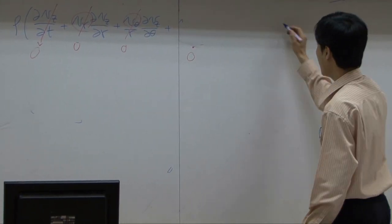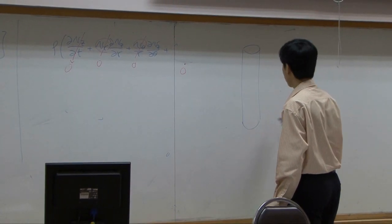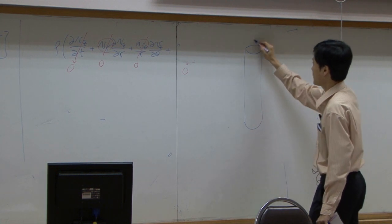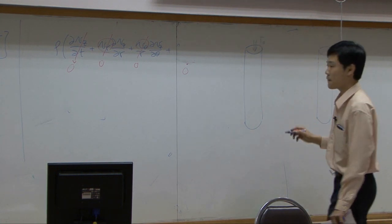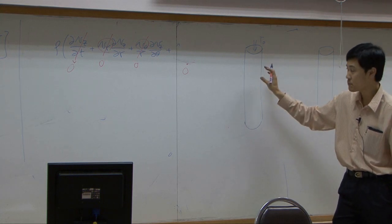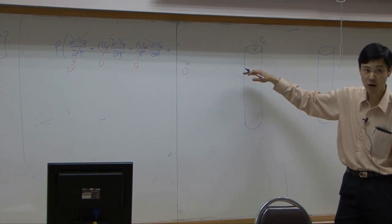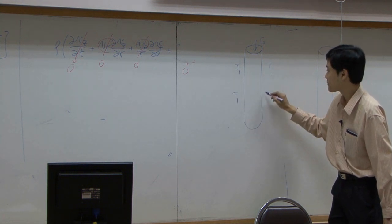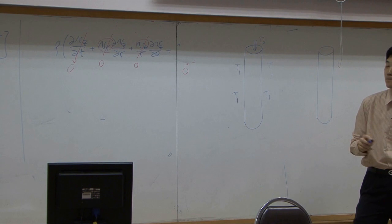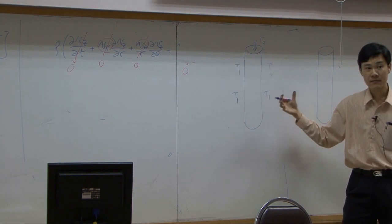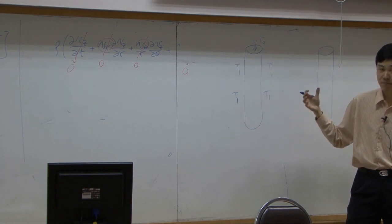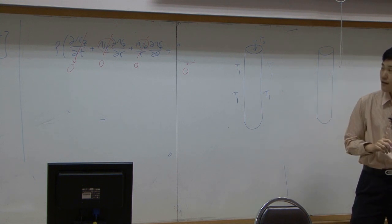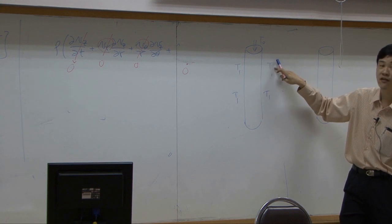First, if you have a pipe with temperature in at T0, and you keep the temperature of the wall of the pipe everywhere to be T1, the surface of the pipe is somehow kept at constant temperature. Suppose this one is hot, this one is cold.